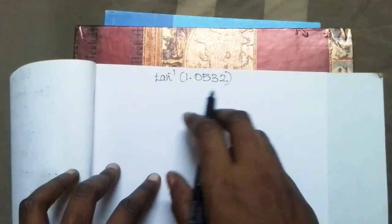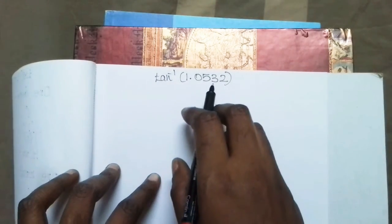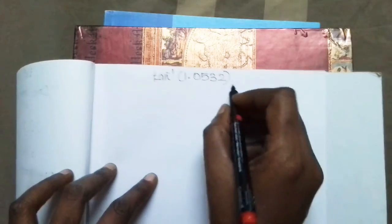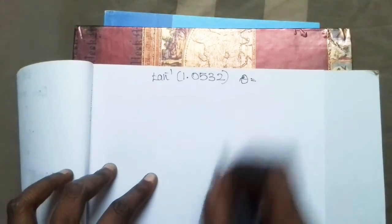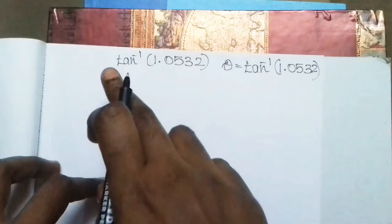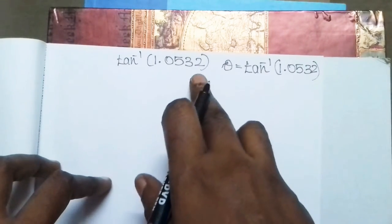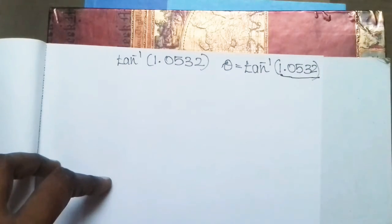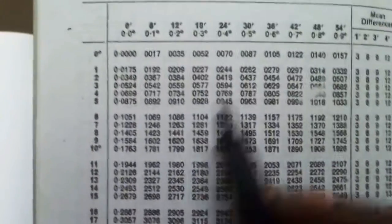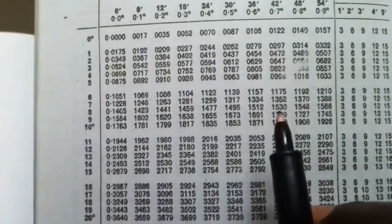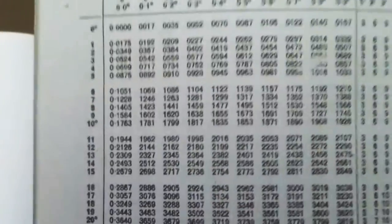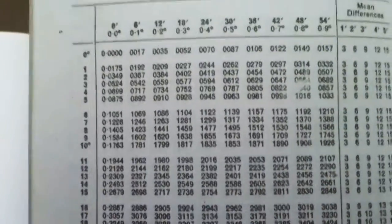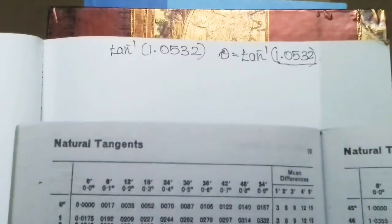So you can look at numbers — 1.0532. So this is theta equal to tan inverse of 1.0532. So you go to the table, search the decimal number, find either an exact value match or the closest value match. Now find the closest mean difference. This is the case for 1.0532.